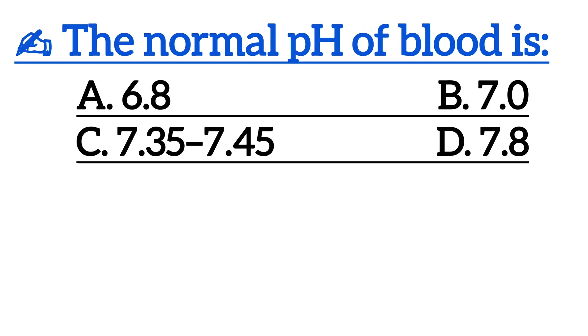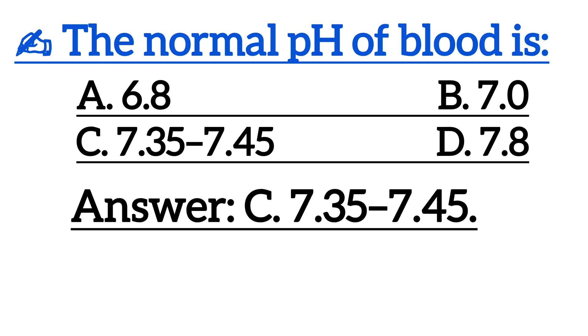The normal pH of blood is — correct answer is option C: 7.35 to 7.45.